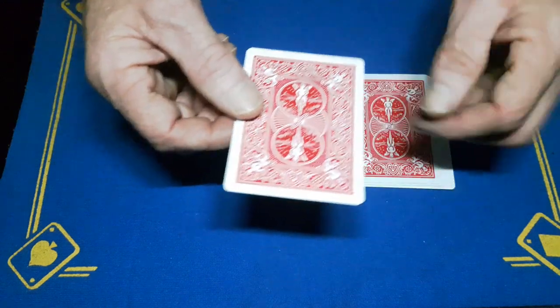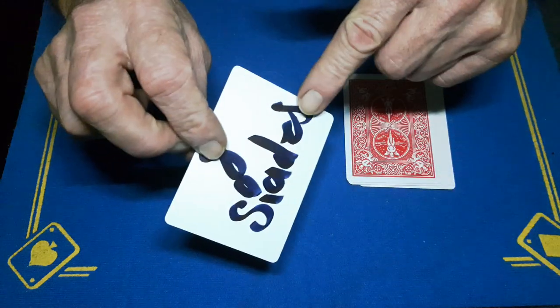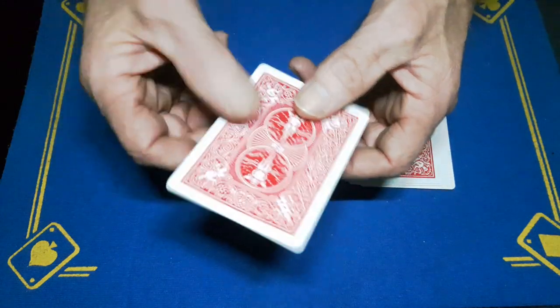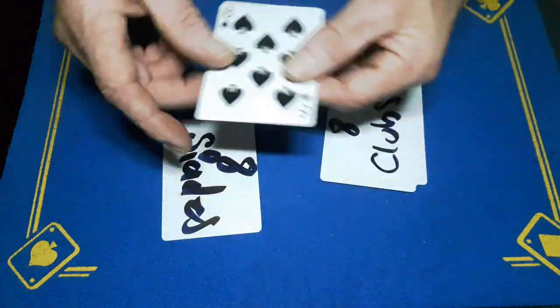So we've got a regular back, blank face, eight of spades written on this card with a bit of double stick tape in the bottom. We've then got a regular card, eight of spades, that's going to go on top of that.